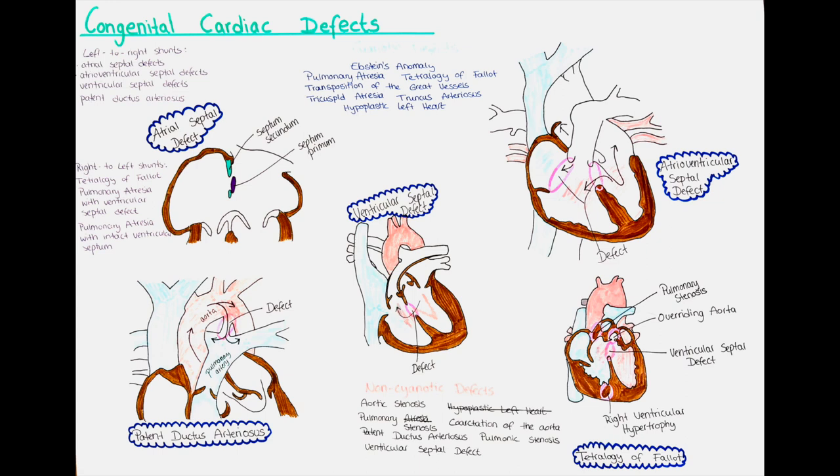Studies show that at least 30% of children with Down syndrome also have a cardiac anomaly. Heart defects can be classified as cyanotic and non-cyanotic, and further classified as a heart defect with a left-to-right shunt, right-to-left shunt, or without shunt.